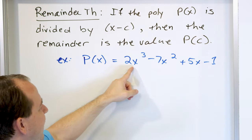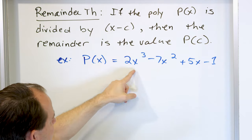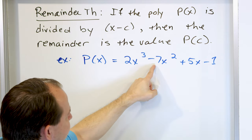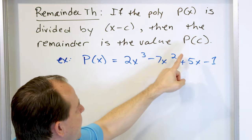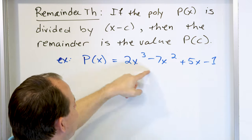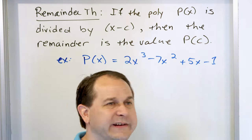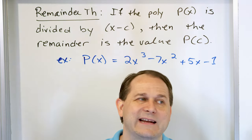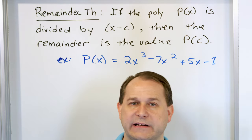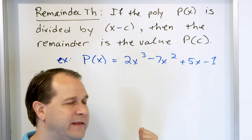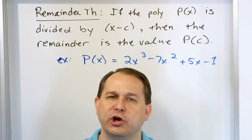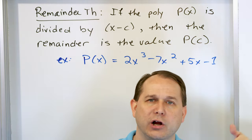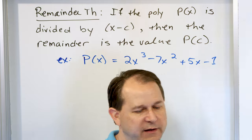Because let's say I put the number 11 in — I'll have to take 11 cubed then multiply by 2, then 11 squared times negative 7, then 11 times 5, and add all the terms together. So there's a lot of multiplications going on because of the exponents. If I want to evaluate the value of this polynomial at a number, I can do it, but I have to crank through all those exponents.